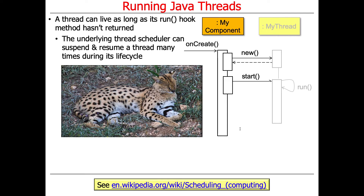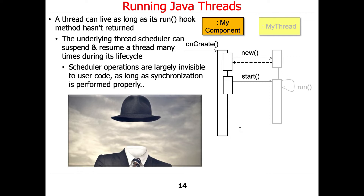During the lifecycle of a thread, it may be suspended and resumed many times by the underlying operating system scheduler, virtual machine, and execution environment. There may be times when the thread is paused or suspended, but it'll still be alive. These thread scheduling operations are largely invisible to your code — you just have to be aware that they could take place. This matters because you have to make sure you program with synchronization mechanisms that account for the fact that threads may be asleep in ways you have no control over.